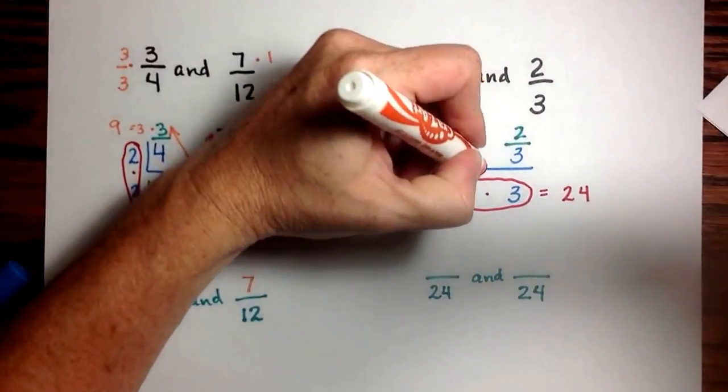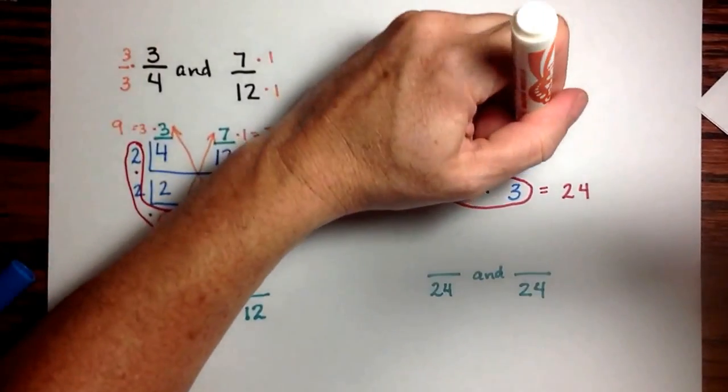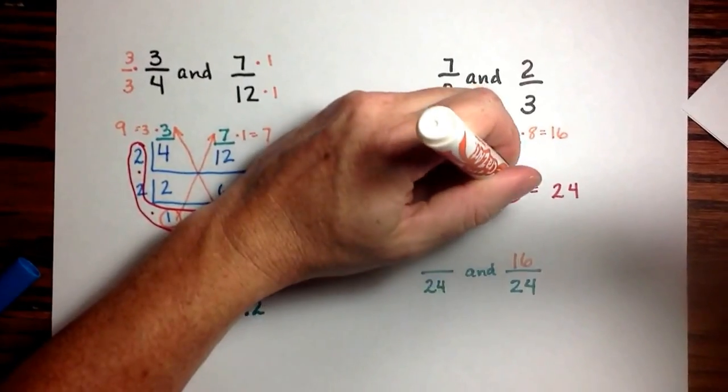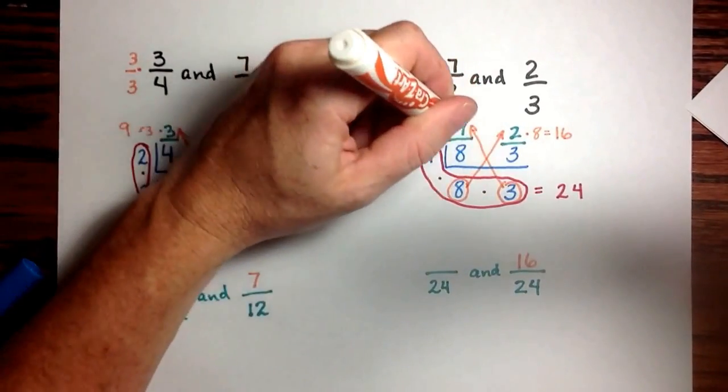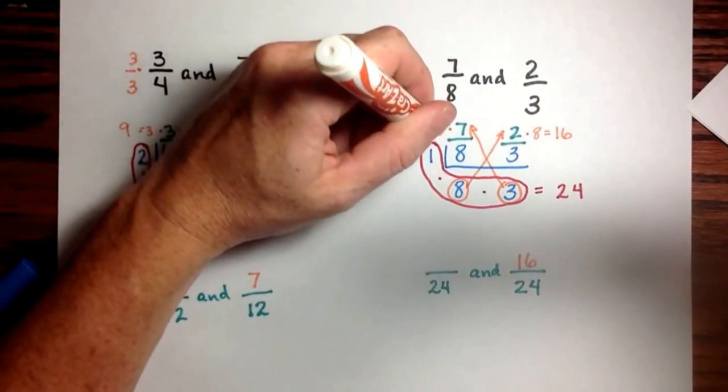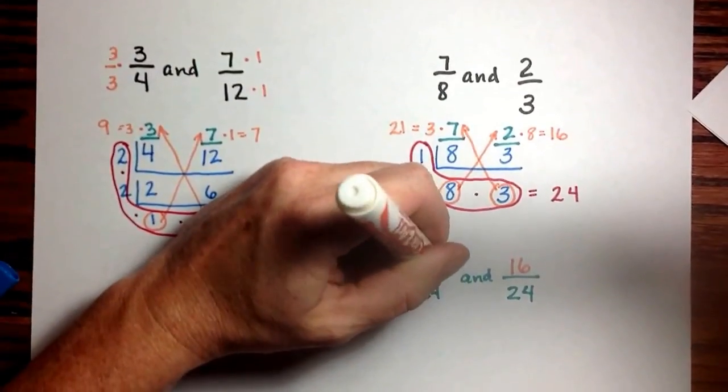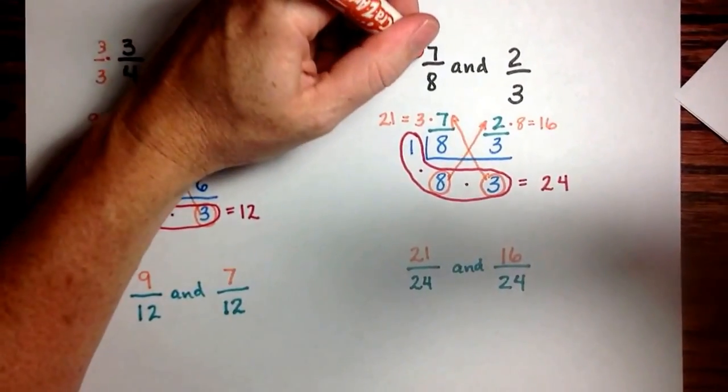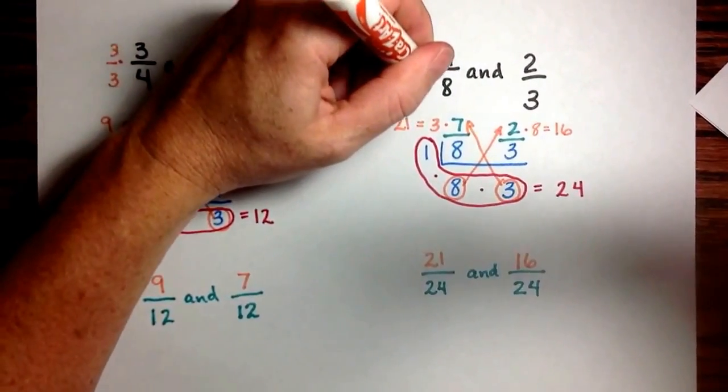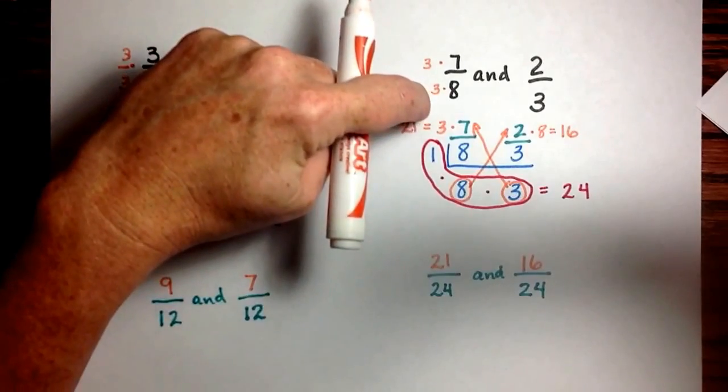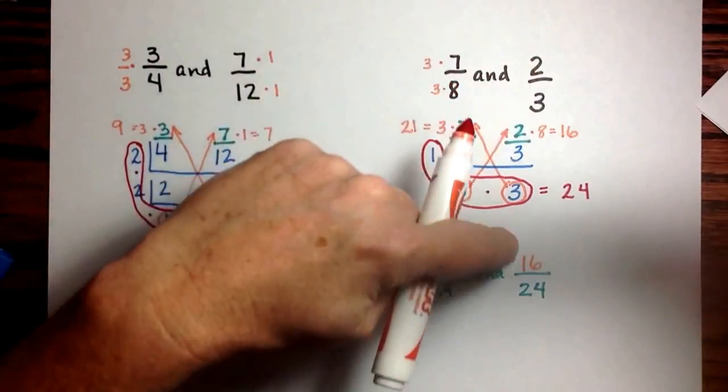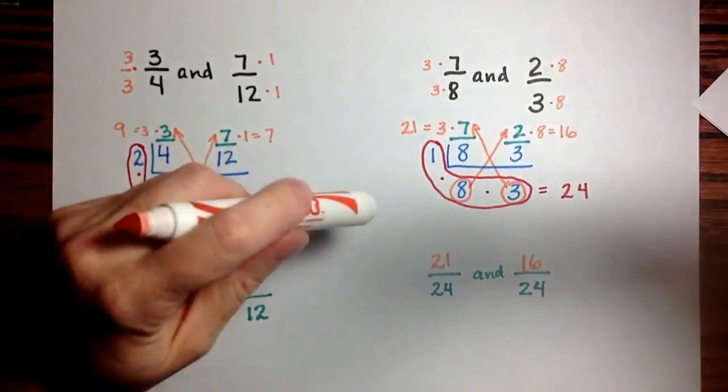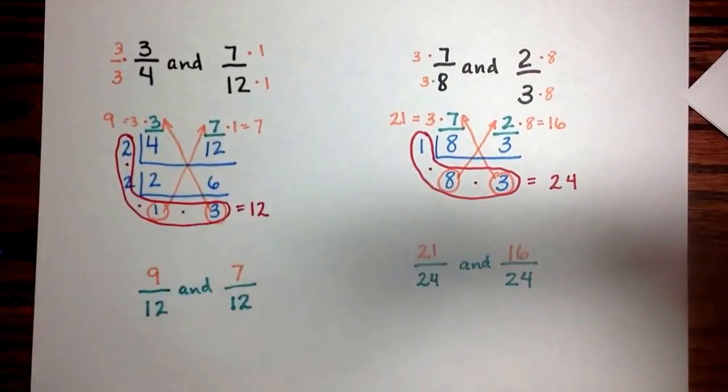Multiply by the diagonal factor here. And we get 2 times 8, which is 16. And by the diagonal factor here, 7 times 3, which is 21. So 7 eighths is equivalent to 21 twenty-fourths, because we multiplied both the numerator and the denominator by 3. And 2 thirds is equivalent to 16 twenty-fourths, because we multiplied both the numerator and the denominator by 8.